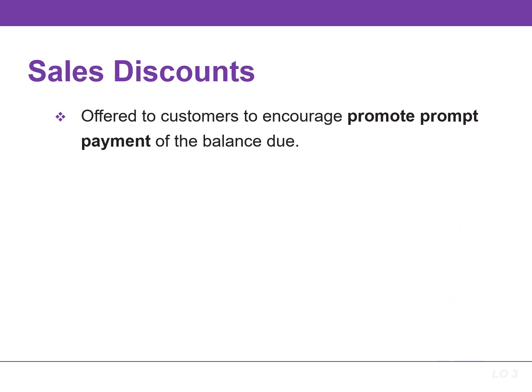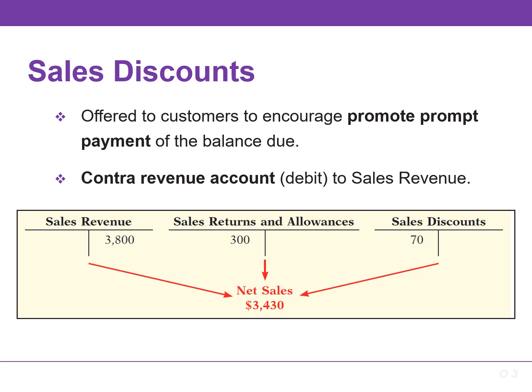As mentioned in our discussion of purchase transactions, the seller may offer the customer a cash discount for the prompt payment of the balance due. The seller refers to this as a sales discount. Like a purchase discount, a sales discount is based on the invoice price, less returns and allowances, if any. The seller increases or debits sales discounts for the discounts that are taken. Like sales returns and allowances, sales discounts is a contra revenue account to sales revenue, and its normal balance is a debit.